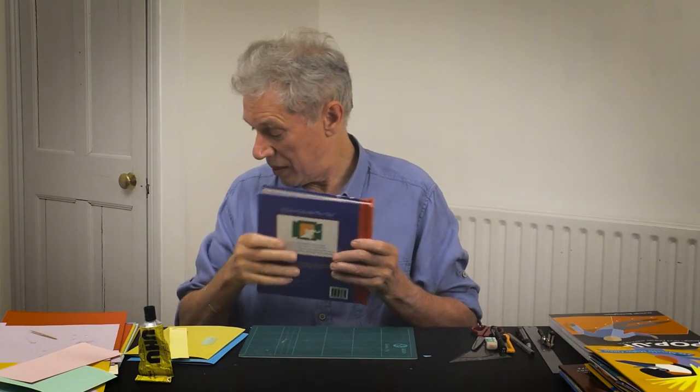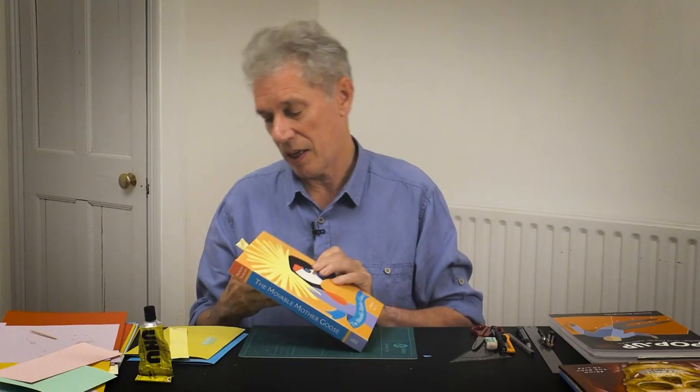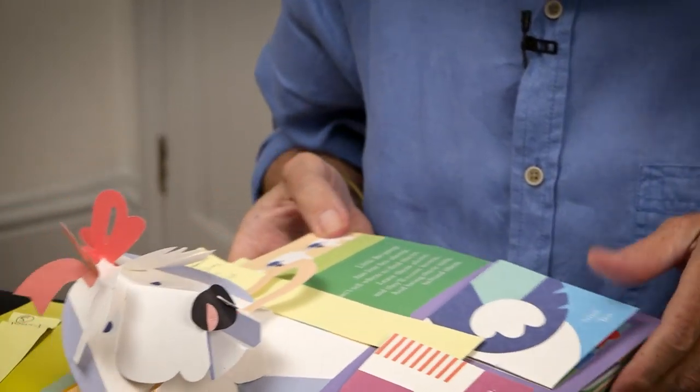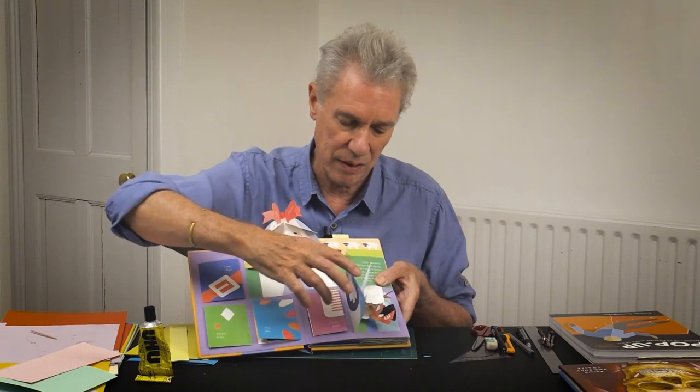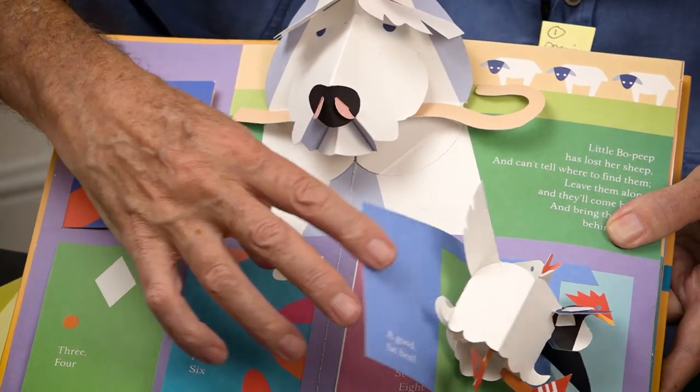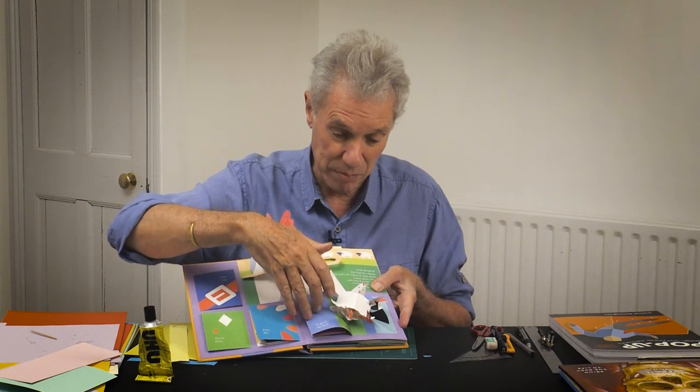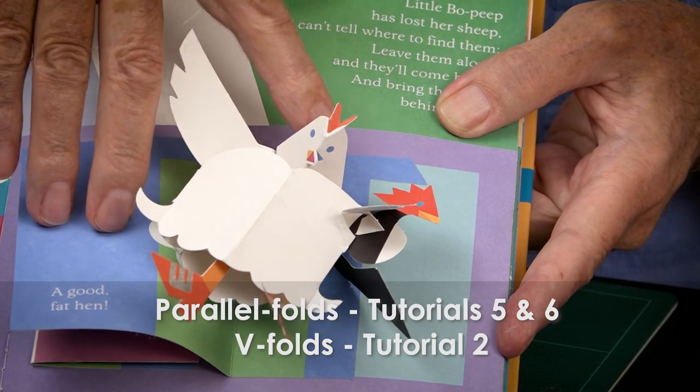The second one is also by Robert Sabuda. This is from The Moveable Mother Goose and it's here. One of the small side pop-ups, it's this one, it's the chicken. It's a diagonal floating plane. The underlying structure is the floating plane. This is a parallel fold on top of it and then this at the top is a V-fold.